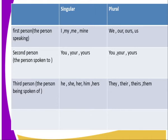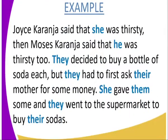As we've said, 'you' occurs in both its singular and plural form. The third person refers to the person being talked about or spoken of. In their singular forms we can have he, she, him, it; and in their plural form we have they, their, them, and theirs. For example: Joyce Karanja said that she was thirsty; then Moses Karanja said that he was thirsty too.